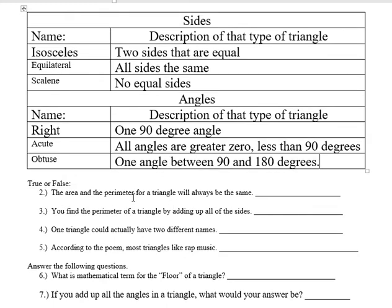Answering this, the area and the perimeter for a triangle will always be the same. That's totally not true. There's two different formulas for that. And it depends on what numbers you get. It could possibly come out the same, but the units would be different. So not really. You find the perimeter of a triangle by adding up all the sides, just like any other polygon. That's true.